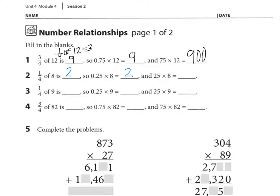And 25 times 8, I know 25 is 100 times more than 25 hundredths. So my product, or the answer to my multiplication problem, is going to be 100 times more than 2. So the answer is 200.